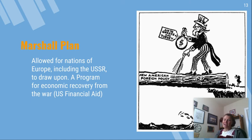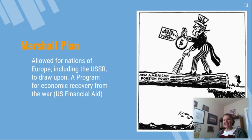Now I want you to stop for a second and look up from your notes — I'm going to give you a code word; we're going to play a little game. Third hour: write down the code word Pablo — P-A-B-L-O. Sixth hour: your code word is Pena — P-E-N-A. Write that down. We'll come back to that; I'll tell you why I'm doing this.